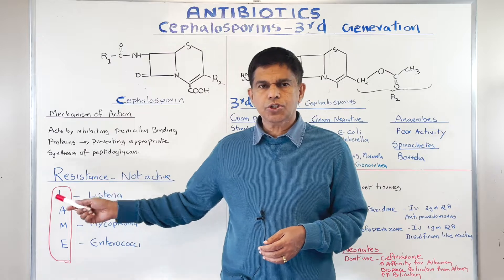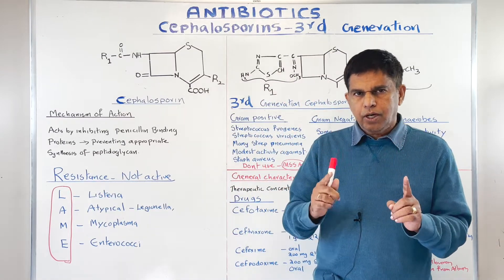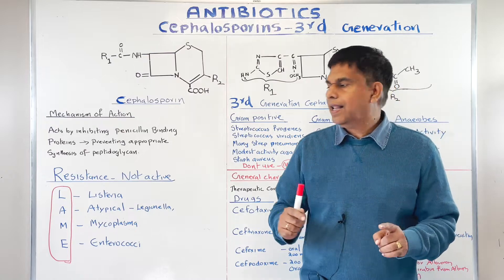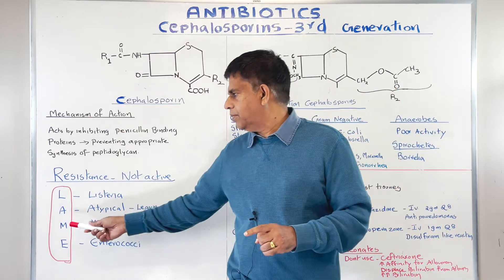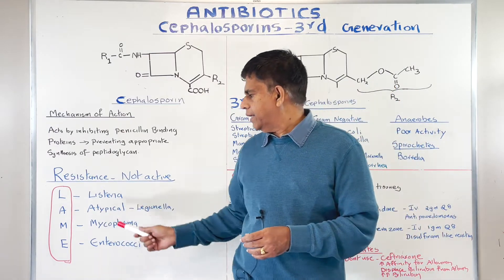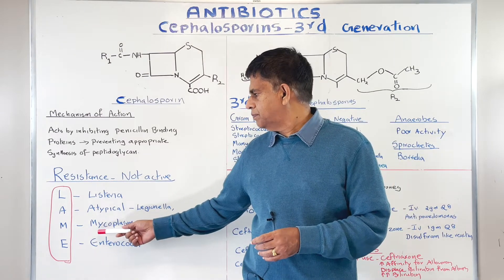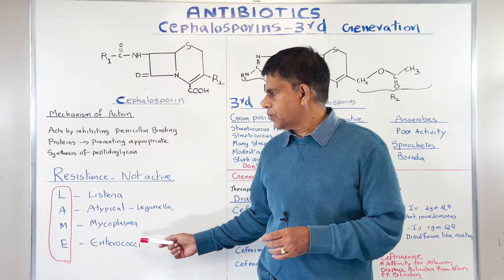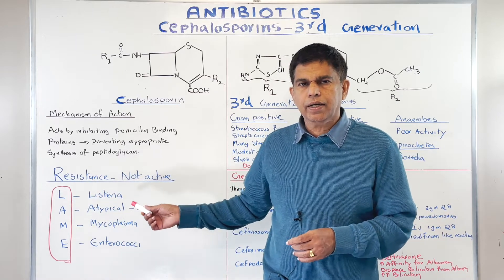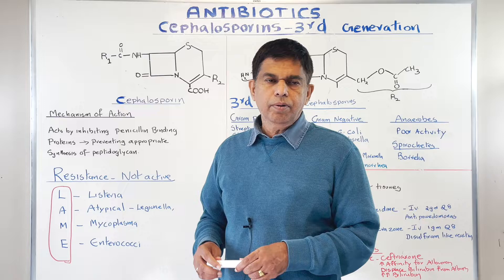Now let's look at resistance. There is a mnemonic for the major organisms: LAME — L-A-M-E. L is Listeria, A is for atypical which is Legionella, M is Mycoplasma, and E is Enterococci. For these organisms, third generation cephalosporins are resistant — they will not work.